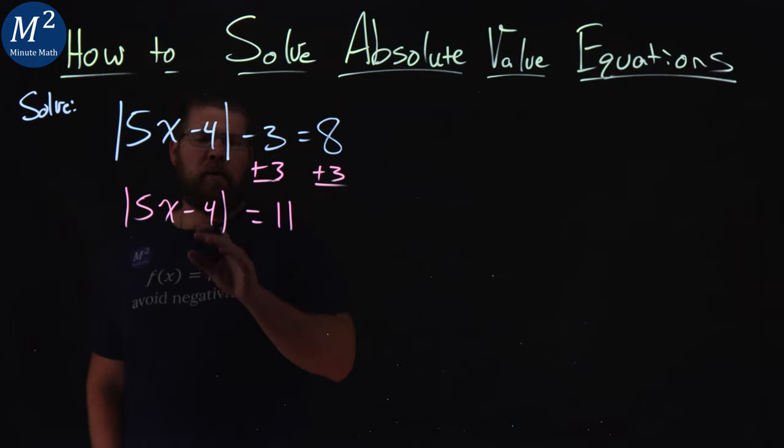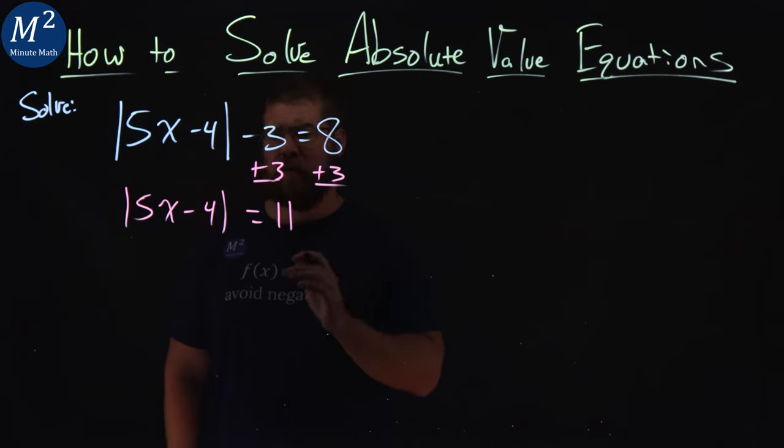Now from here, we want to really break this down. We have the absolute value of something here, 5x minus 4, and that's going to be equal to 11. So we're going to split this into two different equations here.